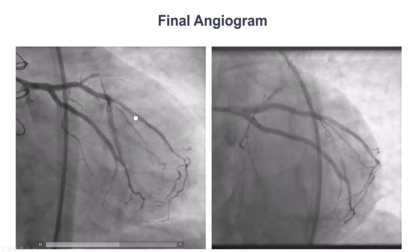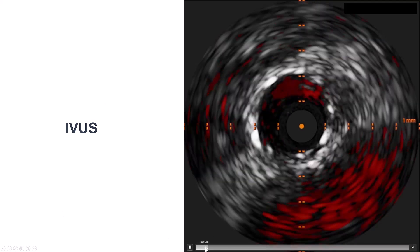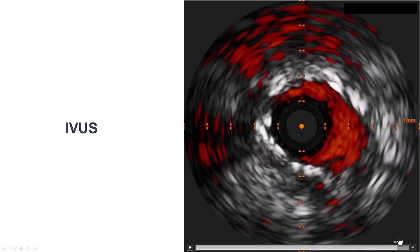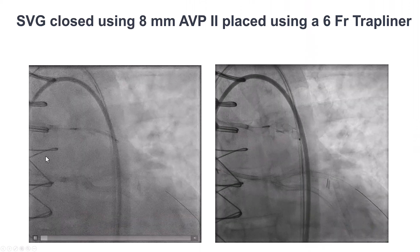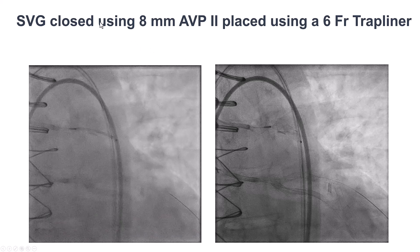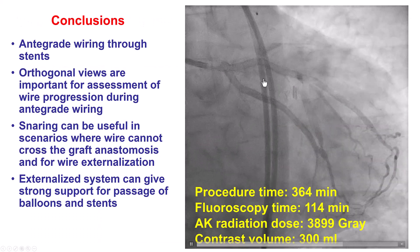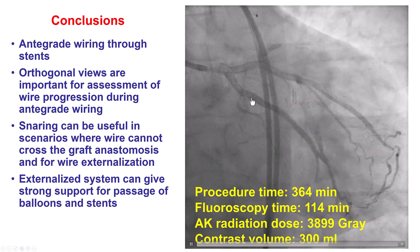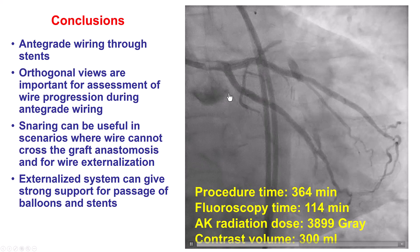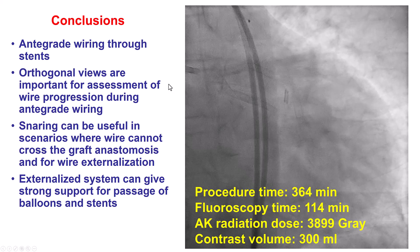There was still significant competitive flow through the graft, which we know can be a problem. We performed intravascular ultrasound that demonstrated good stent expansion and stent apposition all the way to the ostium. Because of the competitive flow, we decided to occlude the saphenous vein graft using an 8 mm AVP2 plug, which reduced the antegrade flow, and now we have flow going through the RAMUS and OM through the left main. The patient had a nice recovery — it was a long case with significant fluoroscopy time and contrast volume, but also provided multiple lessons.